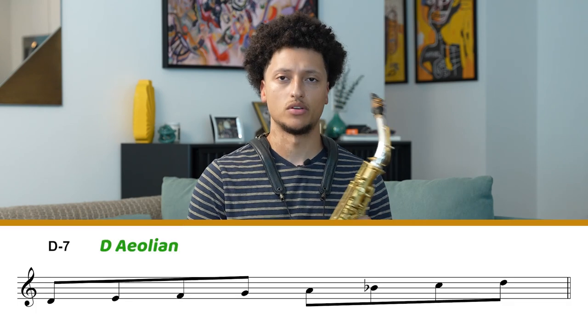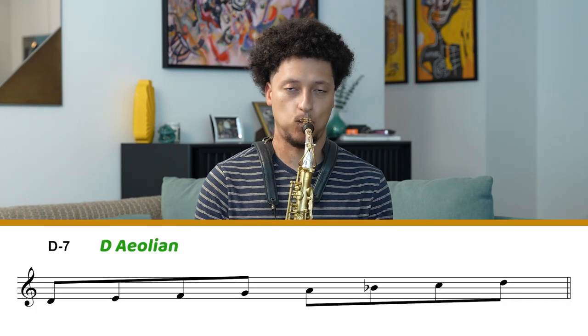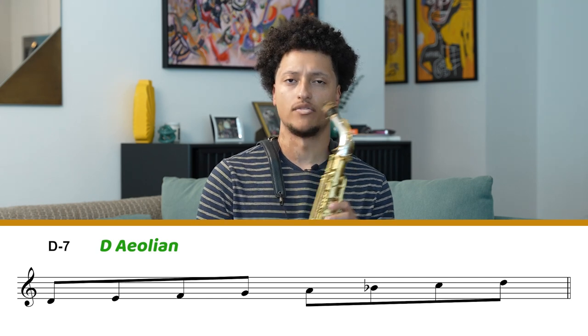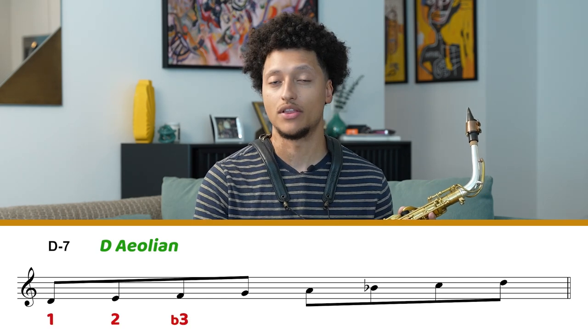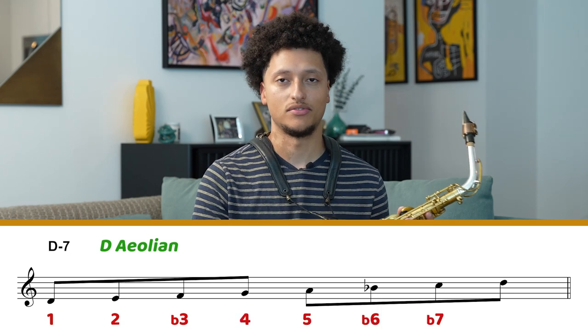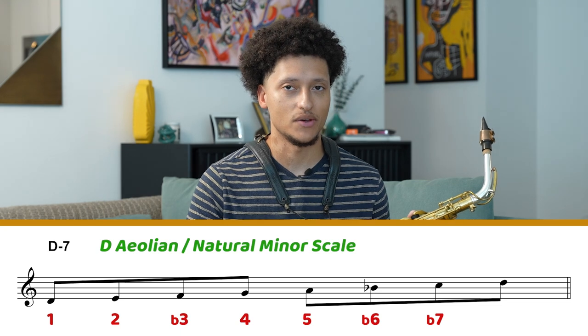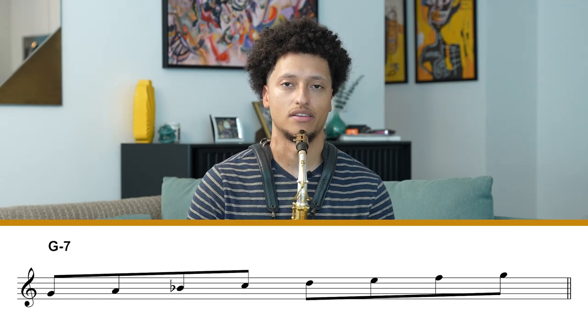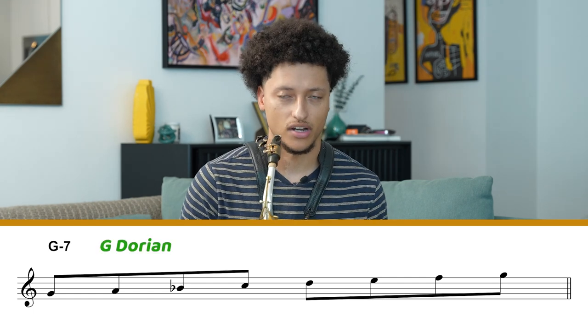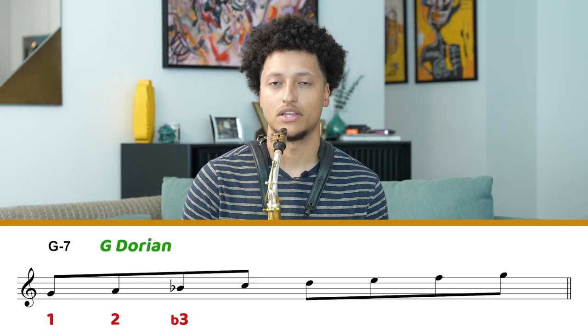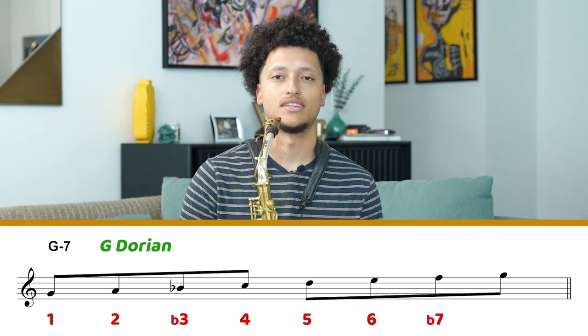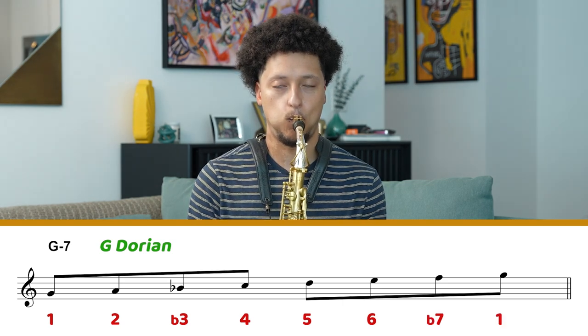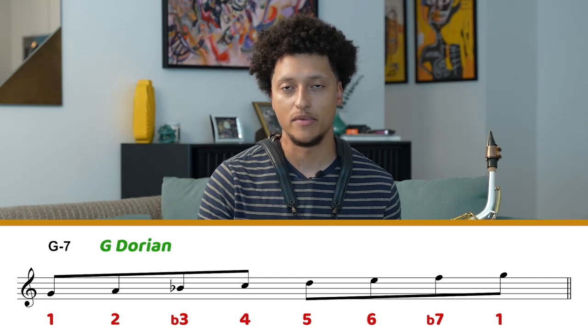The first chord is a sixth chord — a D minor seven — and the sixth mode of the F major scale is D Aeolian, so we play D Aeolian. The formula for an Aeolian scale is: one, two, flat three, four, five, flat six, flat seven — also called the natural minor scale. The next chord is the second degree, so we play the Dorian mode: one, two, flat three, four, five, six, flat seven. Or you can just think of the F major scale starting on the second degree.